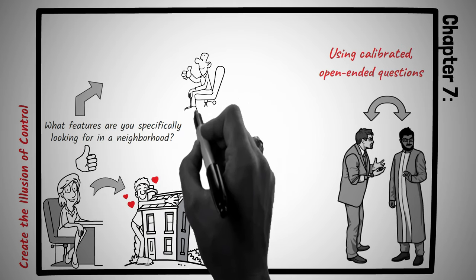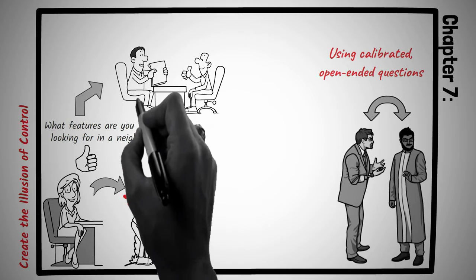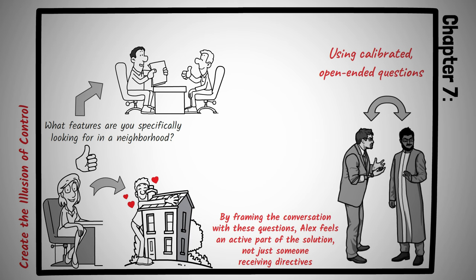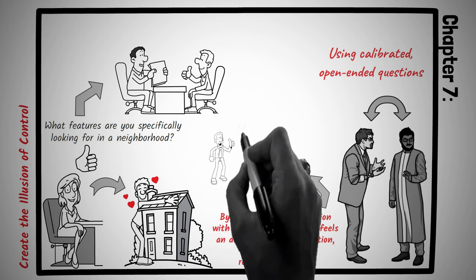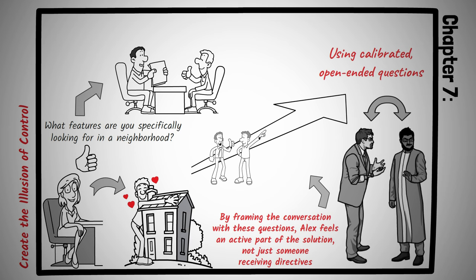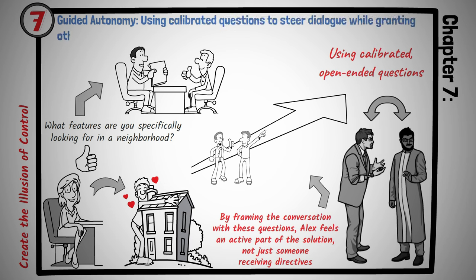Imagine you're attempting to persuade your roommate, Alex, to adopt a cleaning schedule. Instead of dictating terms, you might begin with, How do you think we can keep our place more organized? Or, What days work best for you to handle certain chores? By framing the conversation with these questions, Alex feels an active part of the solution. Not just someone receiving directives. The result? A collaborative environment. And a higher likelihood of consistent cleanliness. Whether it's in high stakes negotiations or everyday interactions, the ability to make others feel in control while you guide the direction is invaluable. It fosters collaboration, reduces resistance, and often leads to more fruitful outcomes. Principle number seven is guided autonomy. Using calibrated questions to steer dialogue while granting others a sense of command.